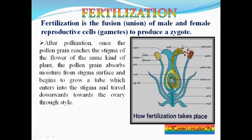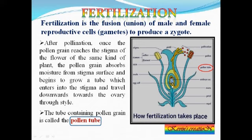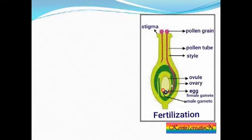The pollen tube ultimately penetrates the ovary. The tube containing the pollen grain is called the pollen tube. This yellow structure is the pollen tube, which travels from the stigma through the style and reaches the ovary. In the picture you can clearly see the pollen grains landed on the stigma, the pollen tube, the style, the ovary, and the ovule.